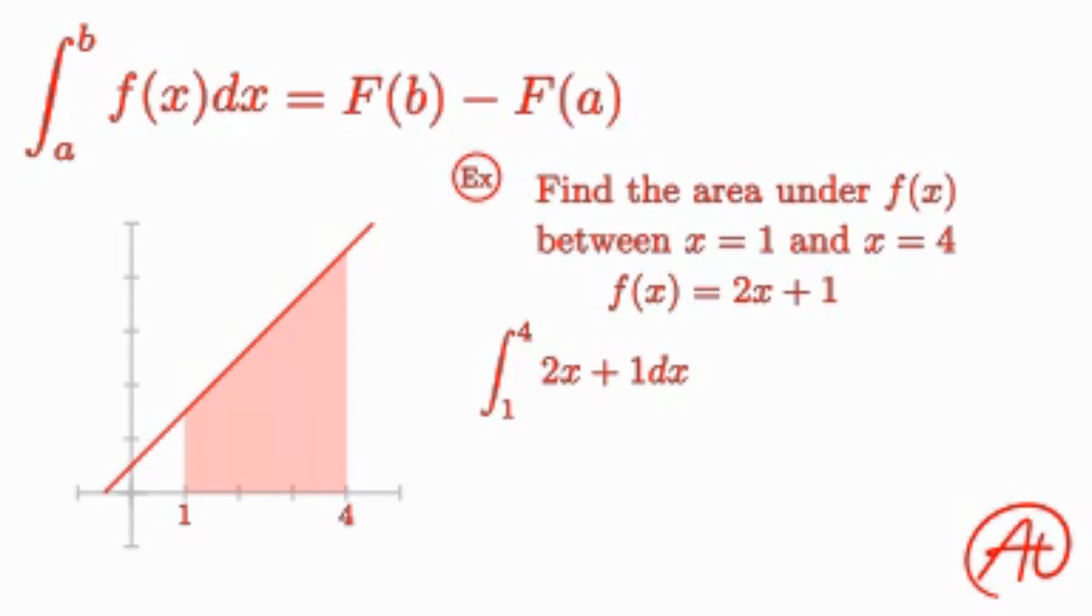First things first, we need to find the antiderivative of this function, capital F of x. Using the integral power rule we learned before, we find that the antiderivative is 2x squared divided by 2 plus x plus c, which can be simplified to just x squared plus x plus c. And I like to write it in these brackets like this with my upper and lower bounds to remind me that we still need to plug in those values.